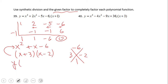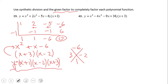So the full factored form is x plus one times x minus two times x plus three. Now that we have the factored form, we can do many things like graphing, finding the zeros, and so on. Pause this video clip and try number 40.